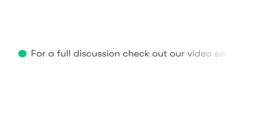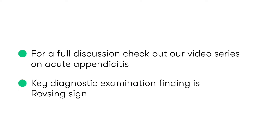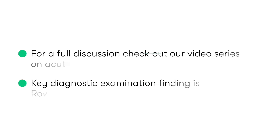For a full discussion on how appendicitis presents, make sure you check out our video series on acute appendicitis. But in this video, we're going to focus on one of the key diagnostic examination findings that we should look to elicit in someone who has acute appendicitis, and that's Rovsing's sign.